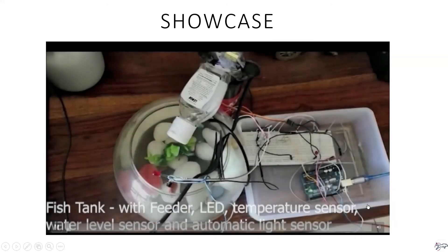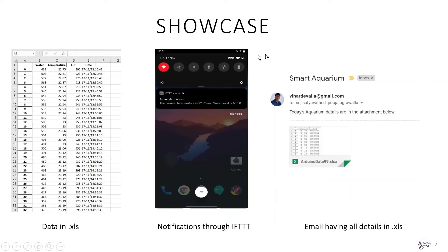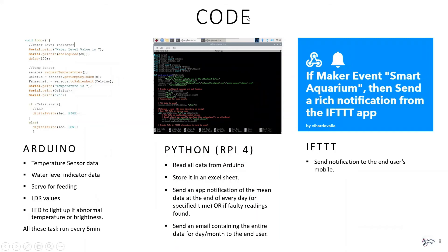The Python code ensures that data received from the Arduino is stored in an Excel sheet. At the end of the day — or the month, depending on monitoring type — it sends a notification with daily data and a summary of statistics at the end of the month, all done using Python on the Raspberry Pi.